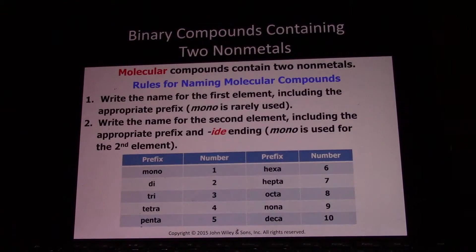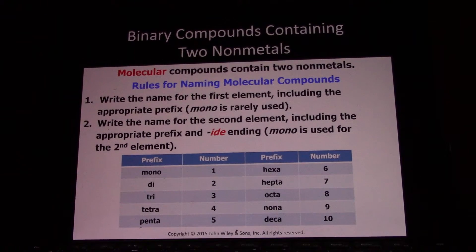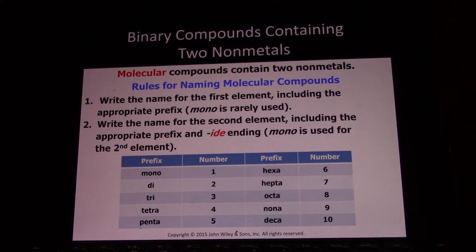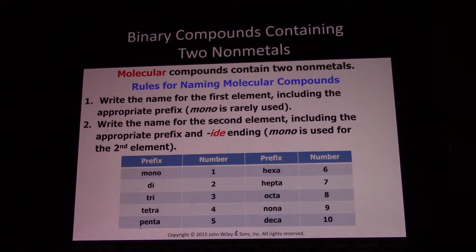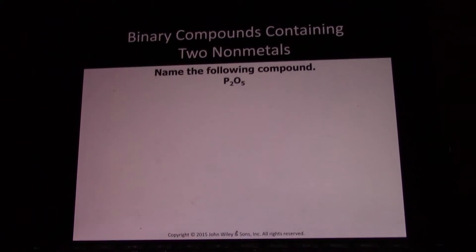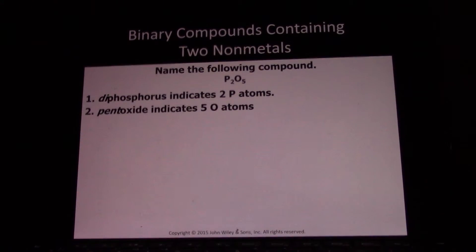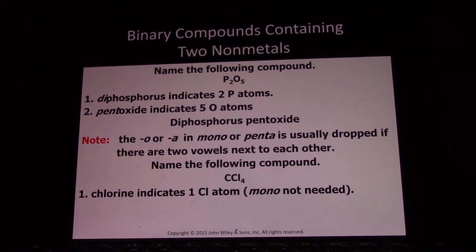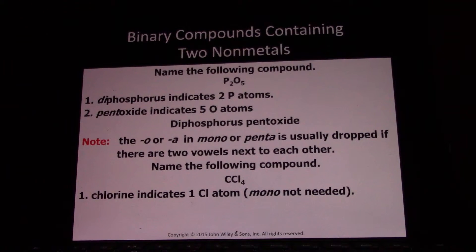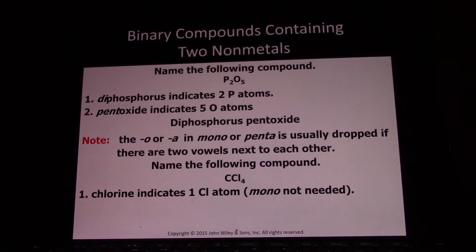When you name a molecular compound, if you only have one of the first atom, you omit the first mono. So CO is carbon monoxide, not monocarbon monoxide. CO2 is carbon dioxide, not monocarbon dioxide. When you only have one of the very first element, you omit that first mono. But if you only have one of the second element, you have to use mono. So P2O5 is diphosphorus pentoxide — two phosphoruses, five oxygens. Pentaoxide is shortened to pentoxide because it's easier to say when two vowels are adjacent.